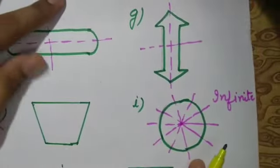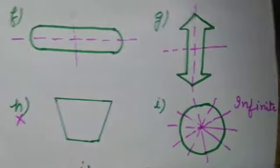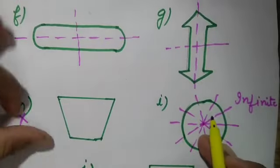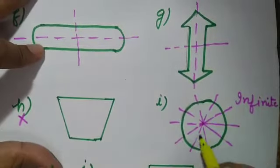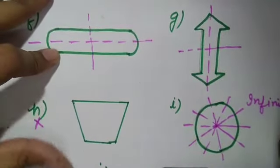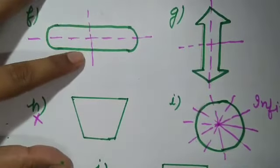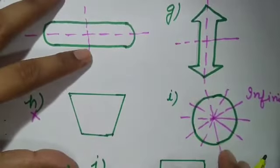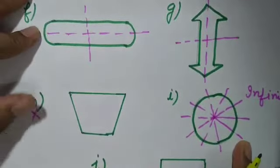Come to part I. Part I we have is a circle, and we have to draw the lines of symmetry. Whenever this circle is folded along any diameter, those parts will completely overlap each other. So a circle has an infinite number of lines of symmetry. I have drawn a few of them, but a circle has infinite lines of symmetry.